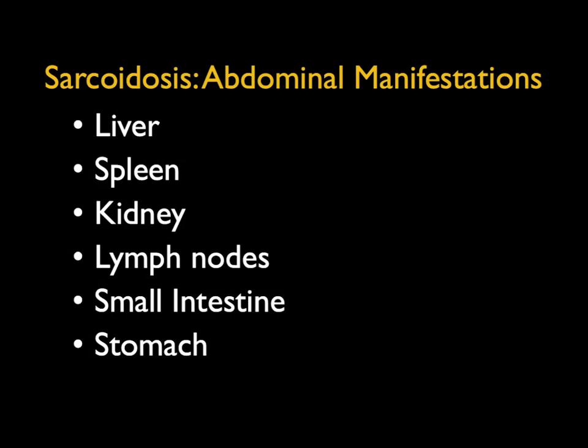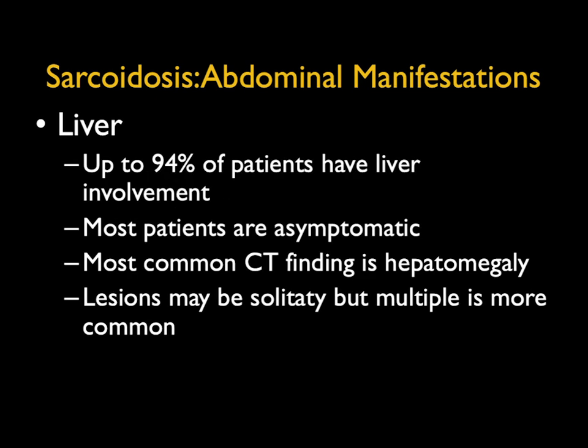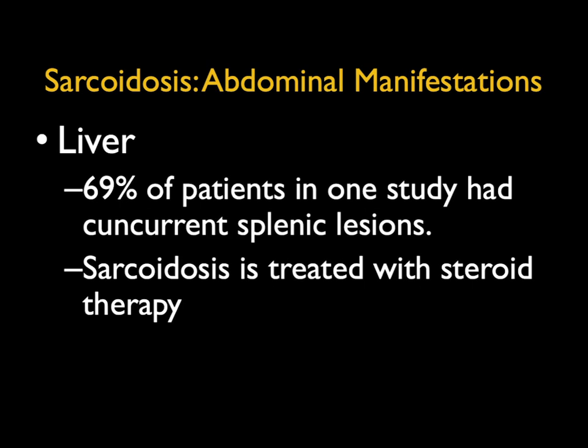I mentioned sarcoidosis because sarcoid is one of the great mimickers. From boards, whenever you weren't sure of something, you'd mention lymphoma or sarcoid — they have so many different appearances. Sarcoid does involve the liver and multiple organs. Up to 94% of patients have liver involvement, though most patients are asymptomatic. The most common CT finding is hepatomegaly and not a mass, but you can see where it becomes a diagnostic possibility. Lesions can be solitary or multiple, and 69% of patients had concurrent splenic lesions in one study. Sarcoid is typically treated with steroids.